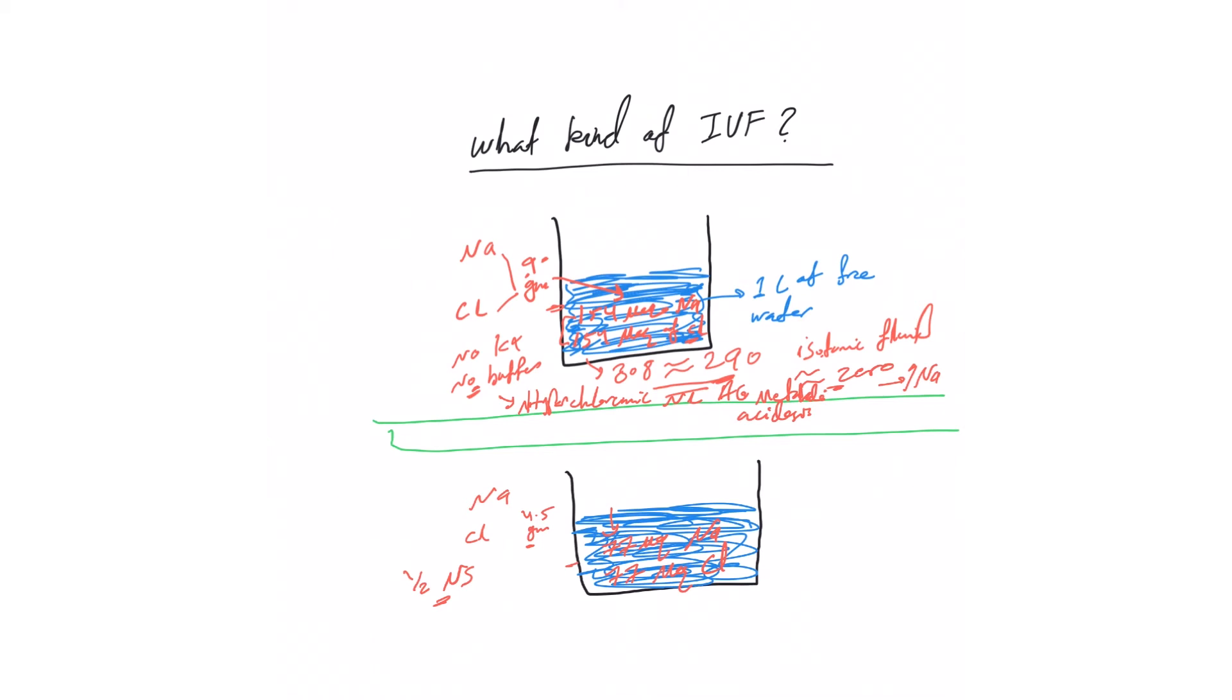If you calculate the osmolarity, 77 plus 77, that's 154 milliequivalent. This is less than 290, way less than 290. So the osmolarity of this solution is less than the body. The tonicity is less, that's why we call this solution hypotonic.